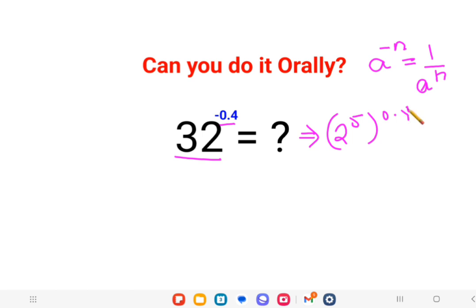Now this 0.4 can be written as 2 raised to 5 into 0.4, which can be written as 4 upon 10. Please understand why I did this multiplication - because there is a rule in indices where if you have a raised to m the whole raised to n, this is a raised to m times n.